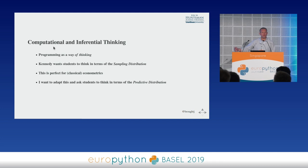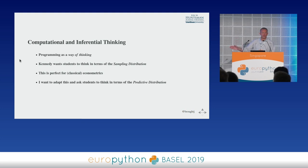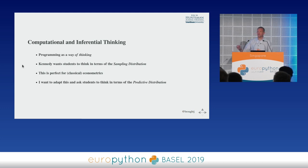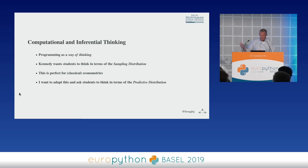I want them to leave with not just a list of skills on their resume but a new way of thinking about the world. Whereas Kennedy is oriented towards econometric students and wants them to think about the sampling distribution, I need to adapt this a little bit. I want students to think about what we might call the predictive distribution, because in finance we're always predicting forward a random variable. I want them to think about the payoff of an asset in terms of that predictive density, and the Monte Carlo method turns out to be a very powerful tool for that as well.